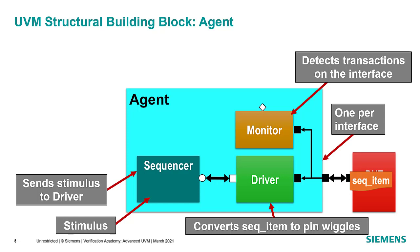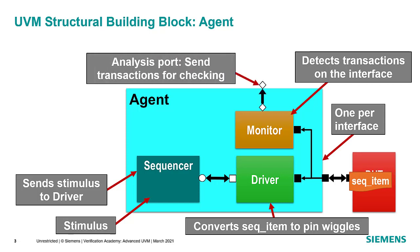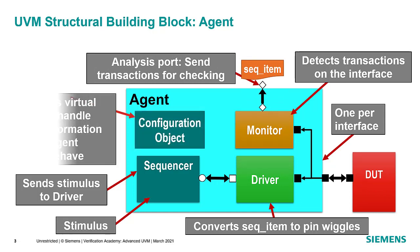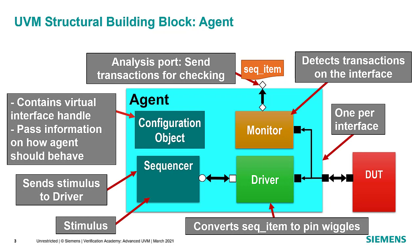We also have a monitor connected to the DUT which recognizes pin-level activity and turns it back into transactions, communicating them out to the rest of the test bench through an analysis port. Every UVM component is configurable via a configuration object, which includes all information the agent needs to operate in context — including a handle to the virtual interface and whether the agent should be active or passive.